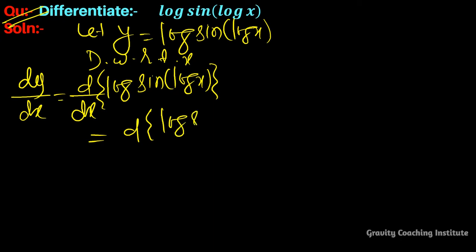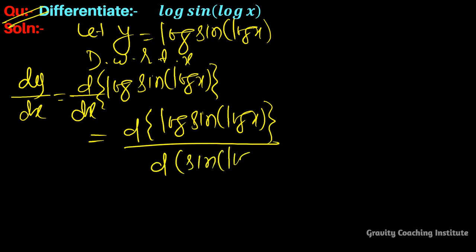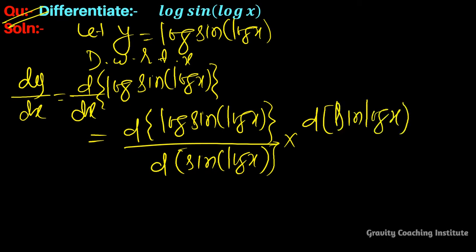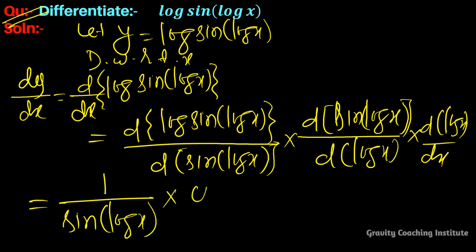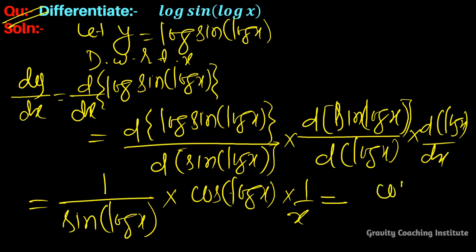This gives log(sin(log x)) over sin(log x), multiplied by the derivative of sin(log x), which is cos(log x) times the derivative of log x, which is 1/x. So the result simplifies to cos(log x) over sin(log x) times 1/x, equal to cot(log x) divided by x. That is the answer.